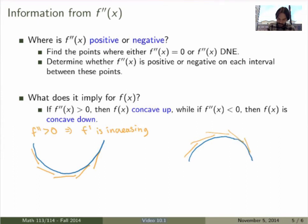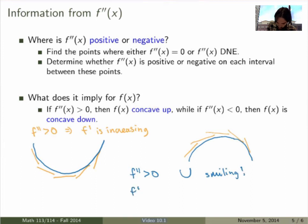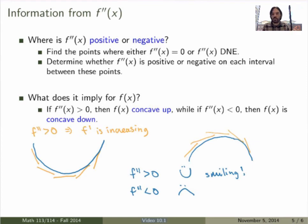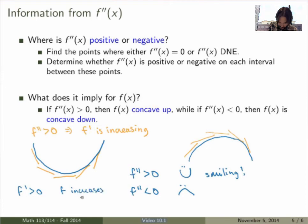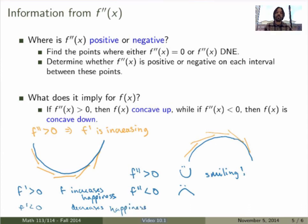There's an easy way to remember this: if f'' is positive, that's good, so you're happy — and when you're happy you smile, giving a concave-up smile shape. If f'' is negative, you're unhappy and you frown, giving a concave-down shape. You can also think of it as: positive f'' increases happiness, negative f'' decreases happiness. That's just a little trick, but it's important you understand why this is true from the picture.